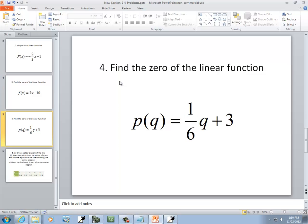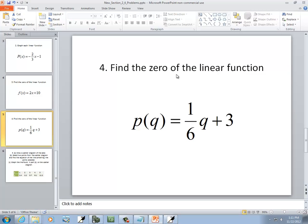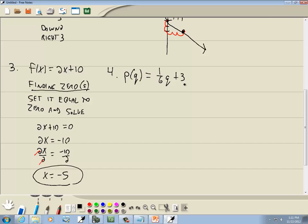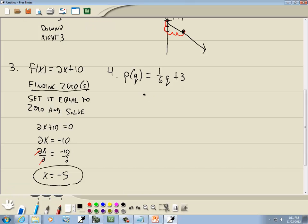Let's take a look at another one. We've got p(q) equals 1/6q plus 3. The instruction again is to find a zero. Well, to find a zero is always the same way. You set it equal to zero and solve it. Now how you solve it is a different matter. So we'll set 1/6q plus 3 equal to zero and solve it. Now this is a linear equation. Remember our steps.